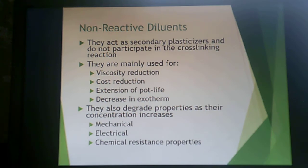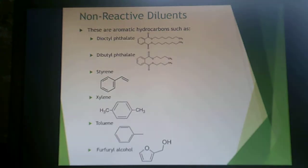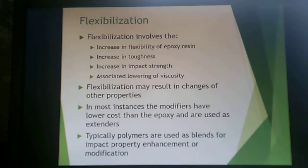Non-reactive diluents can degrade properties — including mechanical, electrical, and chemical resistance — if their concentration gets too high. Examples include dioctyl phthalate, dibutyl phthalate (typical plasticizers), styrene, xylene, toluene, and furfuryl alcohol. These are mainly used to decrease exotherm and viscosity without participating in the actual curing reaction.